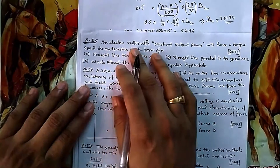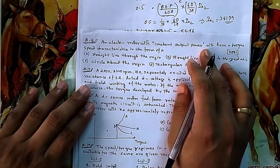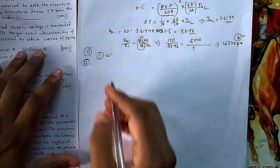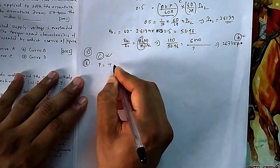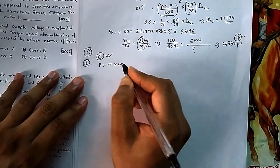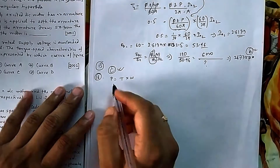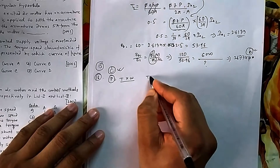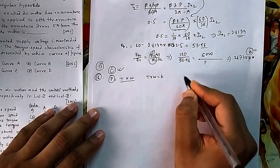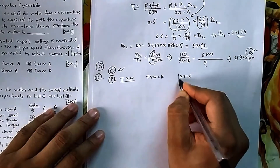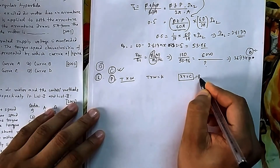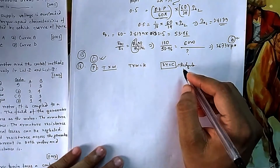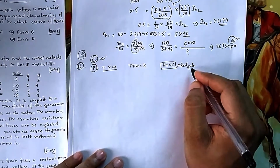In question number 16: an electric motor with constant output power will have a torque-speed characteristic in what form? The output power here is mechanical output power, since they are asking about torque-speed characteristics. Mechanical power output equals torque times omega. If this is constant, then T times omega equals some constant K. The equation x·y = c is known as a rectangular hyperbola.